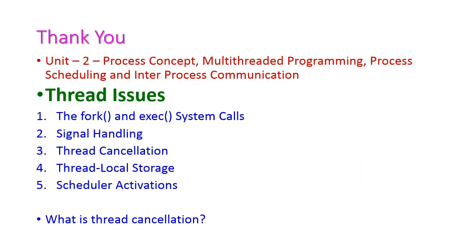We have now seen the five thread issues: the first is fork and exec system call, the second is signal handling, the third is thread cancellation, the fourth is thread local storage, and the fifth is scheduler activation. These five are some of the key issues in thread handling.